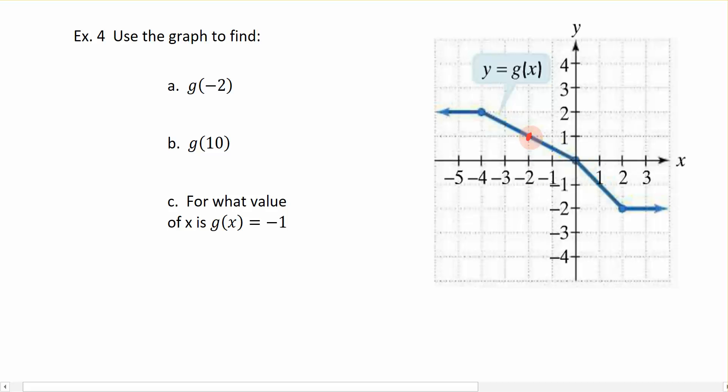So when x is negative 2, the y value is positive 1. Because when we evaluate a function for a number, we are looking at the ordered pair that it forms on the graph.